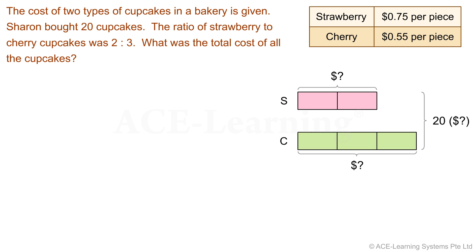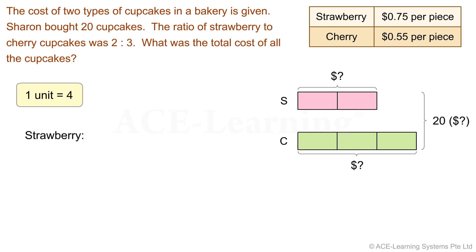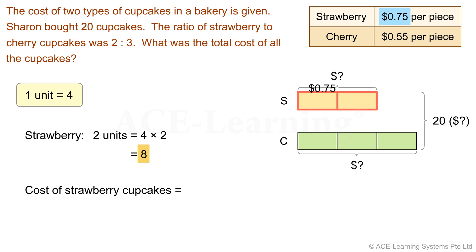Let's find the total quantity and total cost of each type of cupcake. We have a total of 5 equal units, and they represent a total quantity of 20. So, 5 units equal 20. 1 unit equals 20 divided by 5, which equals 4. Now, let's find the number of strawberry cupcakes Sharon bought. She bought 2 units of it. So, 2 units equal 4 times 2, which equals 8. The cost of these 8 strawberry cupcakes is 8 times 75 cents, which equals 6 dollars.